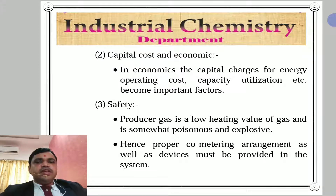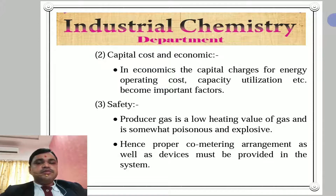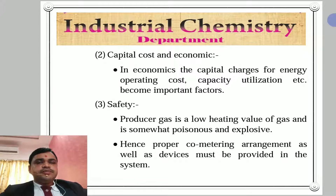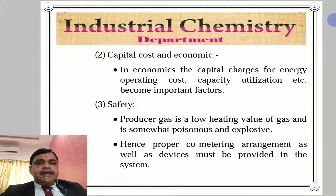Number 3: Point of view of safety. Producer gas is a low heating value gas and is somewhat poisonous and explosive. From a safety point of view, it is very dangerous. Hence, proper CO-metering arrangement as well as devices must be provided in the system to record the producer gas.